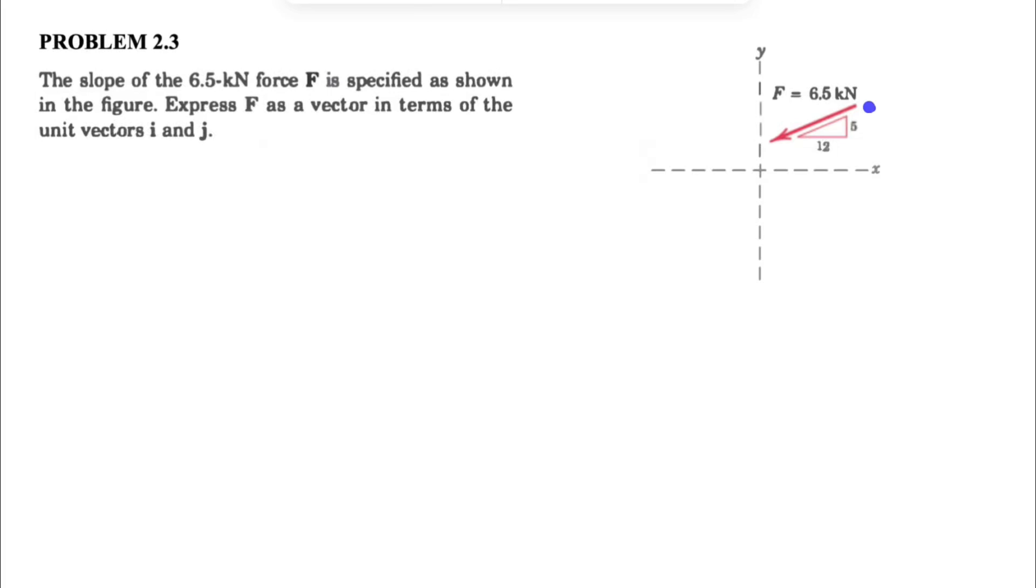All right guys, let's see how we can solve question 3 from chapter 2 of Merriam textbook in engineering mechanics. In this one, we have the slope of the 6.5 kilonewton force F that is specified as we can see in the figure. And we need to express F as a vector in terms of the unit vectors i and j.